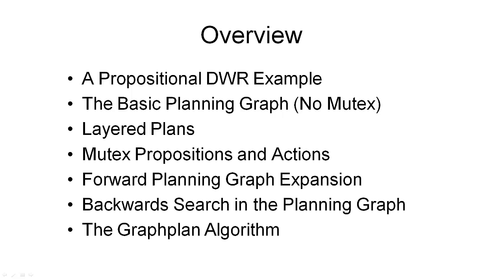Now we've seen the basic data structure that we maintain, including the mutex relations. We've seen how forward planning graph expansion works, and we've seen how backward search in the planning graph works, which means we can now put all this together and finally come up with the Graphplan algorithm.